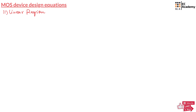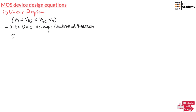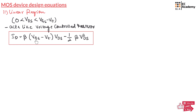The next region is the linear region, where the voltage applied between drain and source is between 0 and (Vgs − Vt). In this region, the MOSFET acts like a voltage-controlled resistor and the drain current is given as: Id = β·(Vgs − Vt)·Vds − (1/2)·β·Vds², where β is the MOSFET gain factor, Vgs is the gate-to-source voltage, Vt is the threshold voltage, and Vds is the drain-to-source voltage.